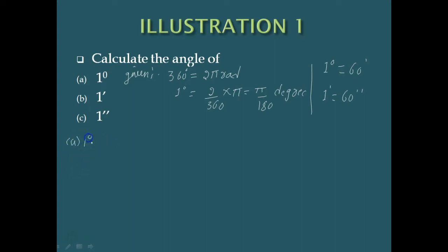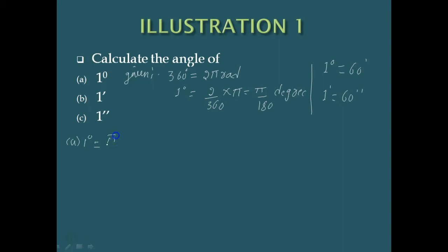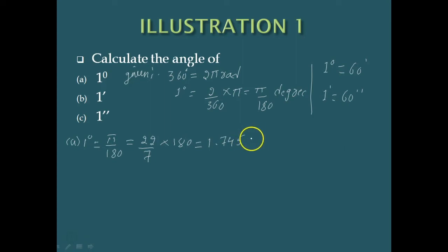For part A, we need to express 1 degree in terms of radians. Since 360 degrees equals 2π radians, 1 degree equals π/180 radians. Using π = 22/7, we get 1 degree equals 1.745 × 10⁻² radians.